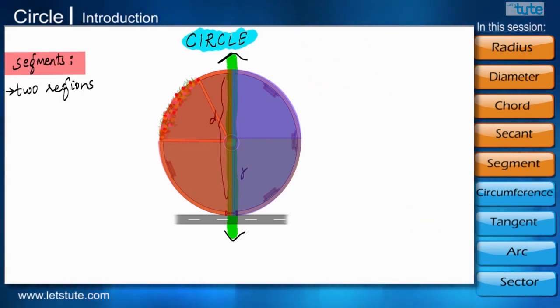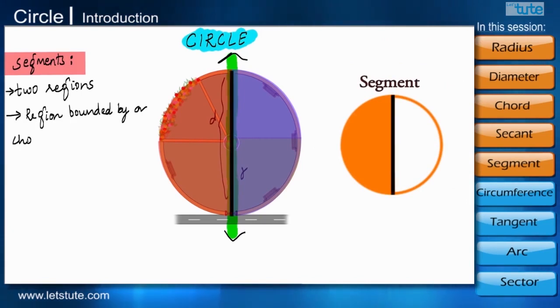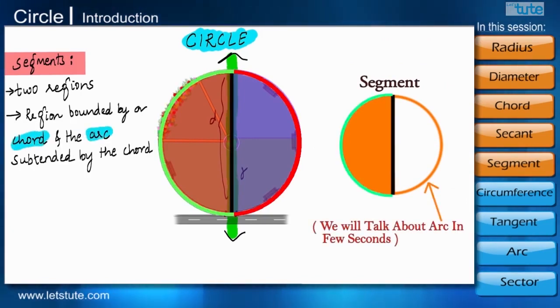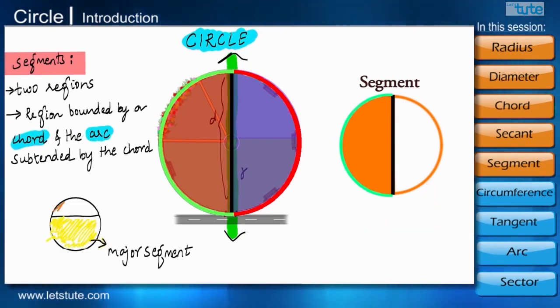The segment of a circle is the region bounded by a chord and the arc subtended by the chord. The larger area is known as major segment and the smaller one is known as a minor segment.